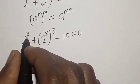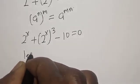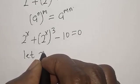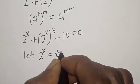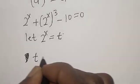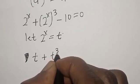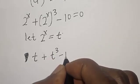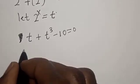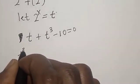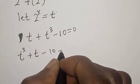We have 2 raised to power x here and 2 raised to power x here. Let 2 raised to power x be equal to t. So t plus t raised to power 3 minus 10 is equal to 0. Rearranging, t raised to power 3 plus t minus 10 is equal to 0.